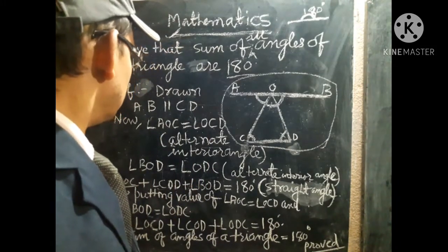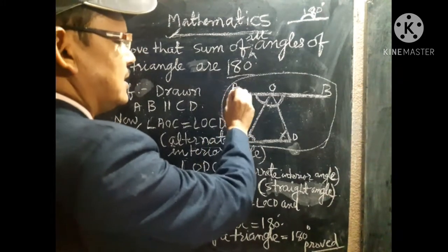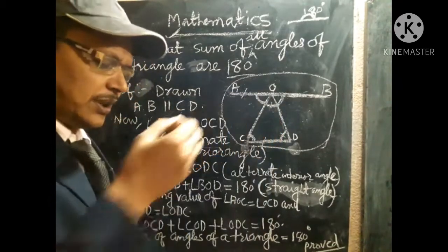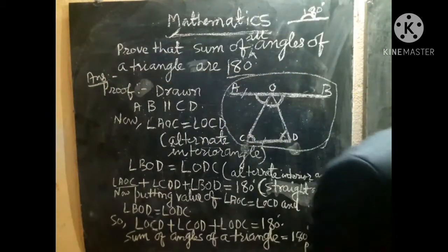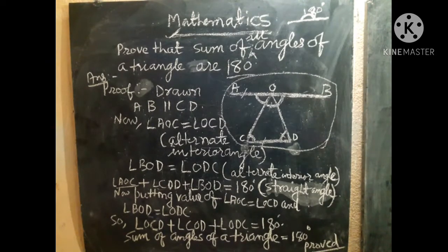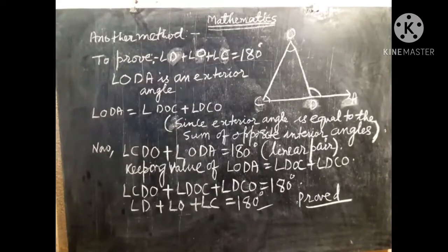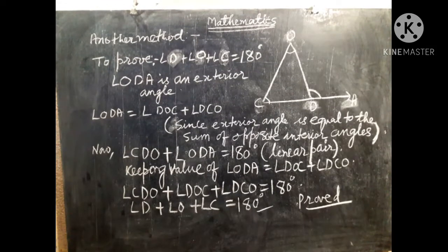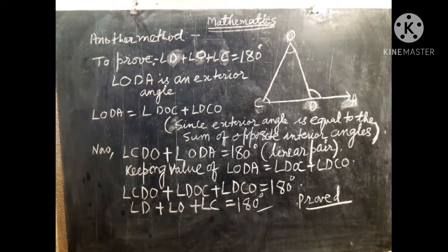In the first method I chose AB parallel to CD. Now we want to discuss another method. Here, ODA is an exterior angle, and through this method we will prove that the sum of all angles of a triangle is 180 degrees. This involves basic geometry and construction.